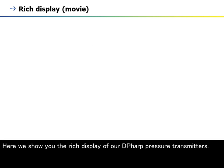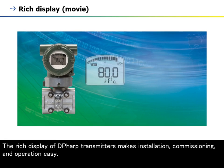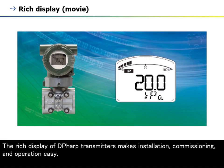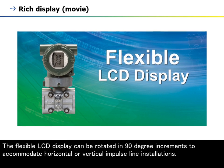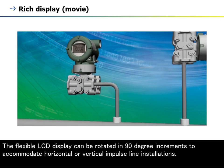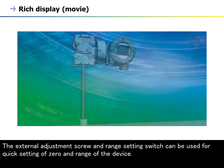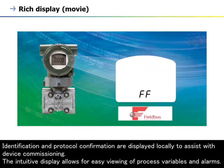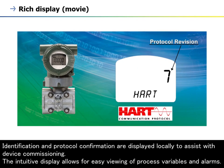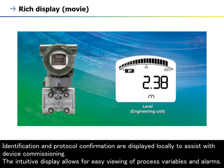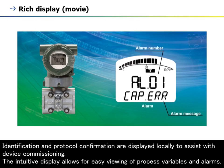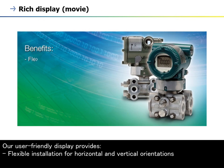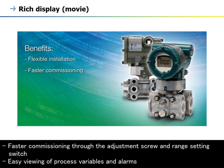The rich display of DP-HARP pressure transmitters makes installation, commissioning, and operation easy. The flexible LCD display can be rotated in 90-degree increments to accommodate horizontal or vertical impulse line installations. The external adjustment screw and range setting switch can be used for quick setting of zero and range. Identification and protocol confirmation are displayed locally to assist with device commissioning. The intuitive display allows for easy viewing of process variables and alarms, with flexible installation for horizontal and vertical orientations. Faster commissioning through the adjustment screw and range setting switch.